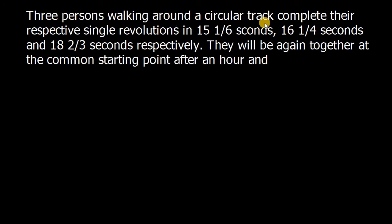Three persons walking around a circular track complete their respective single revolutions in 15 and 1 by 6 seconds, 16 and 1 by 4 seconds, and 18 and 2 by 3 seconds respectively. They will be again together at the common starting point after an hour and how many seconds.